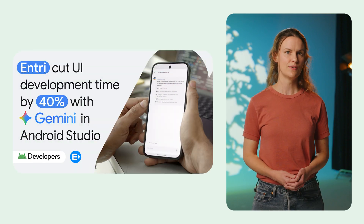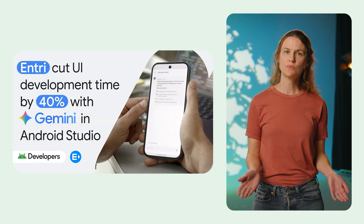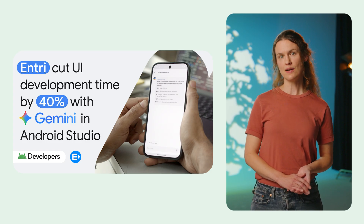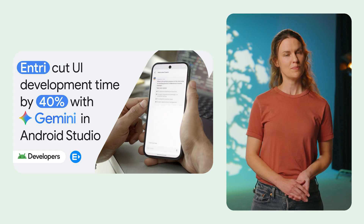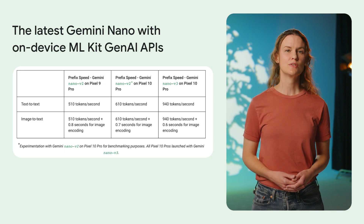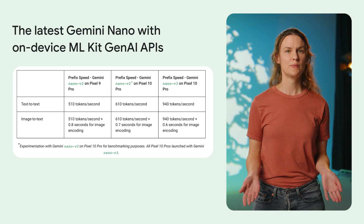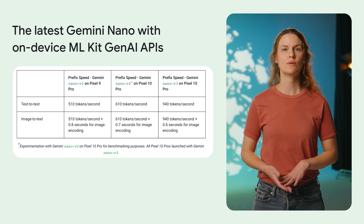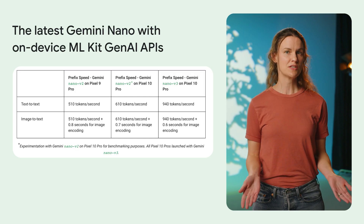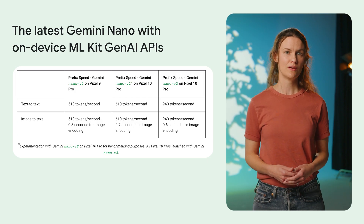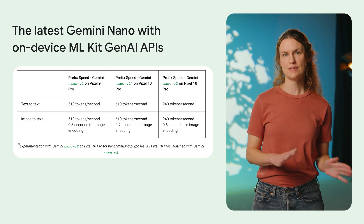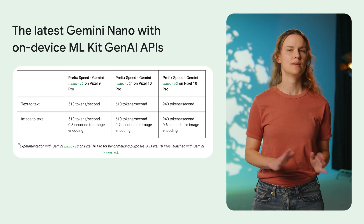Entry, an online learning platform, also reduced its UI development time by 40% by converting Figma mockups directly into Compose code. The latest version of Gemini Nano enables you to integrate capabilities like summarization, proofreading, rewriting, and image description. Performance benchmarks on Pixel 10 Pro show an increase in how fast the model processes input with text-to-text and image-to-text.